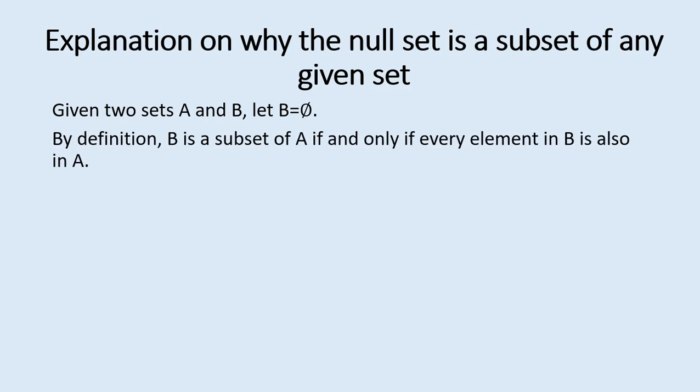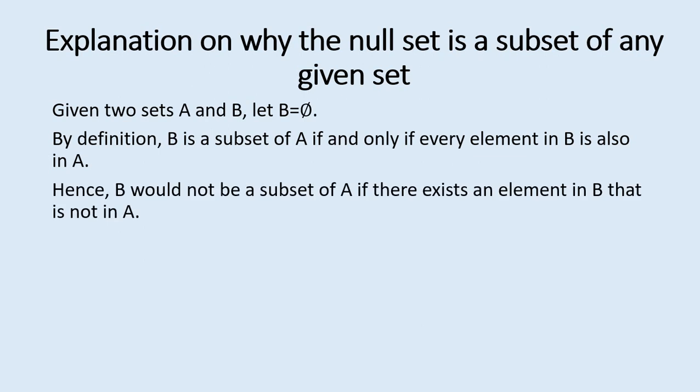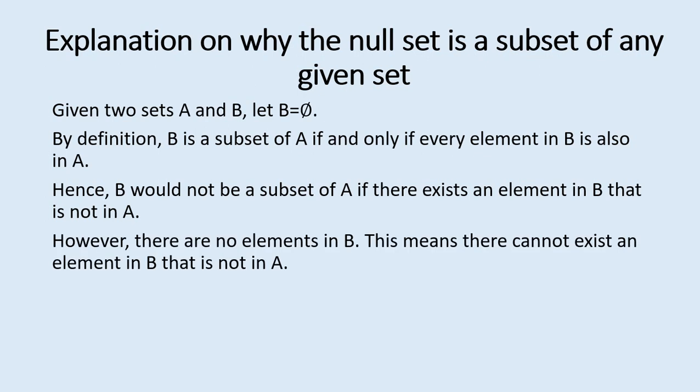We now look at why the null set is a subset of any given set. Given two sets A and B, let B equal the null or empty set. By definition, B is a subset of A if and only if every element in B is also an element in A. B would not be a subset of A if there is some element in B that is not in A. We can agree with that.